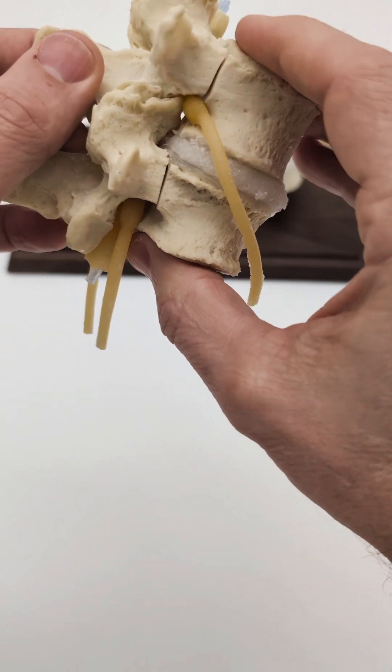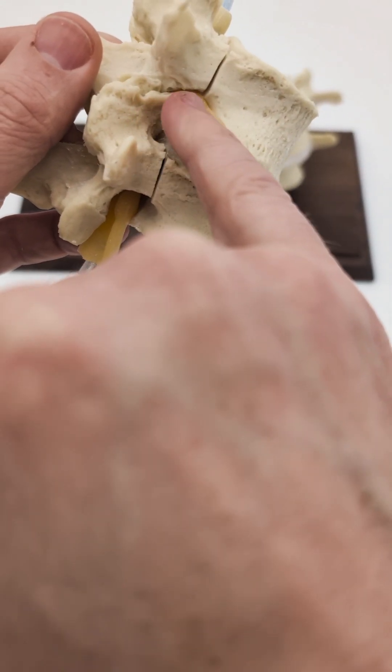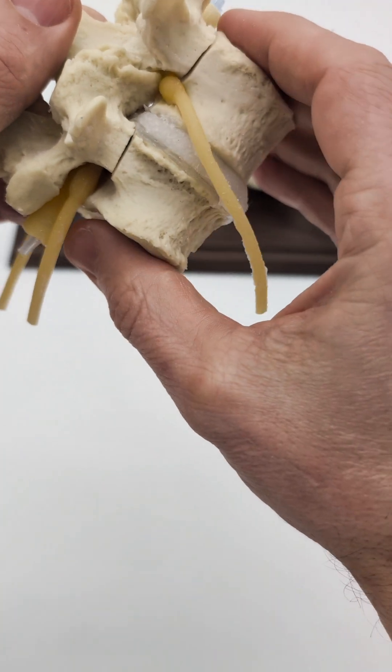This L4 nerve root is being affected by this projecting osteophyte which has an effect on the spacing of this IVF.